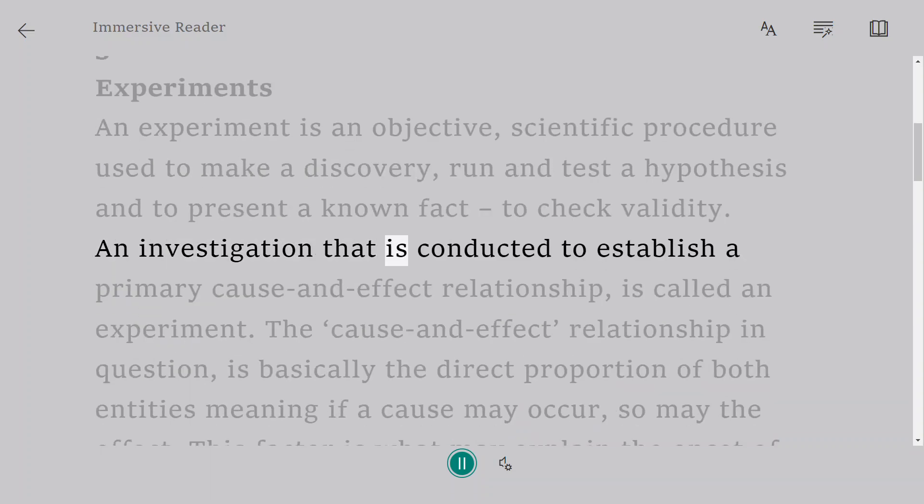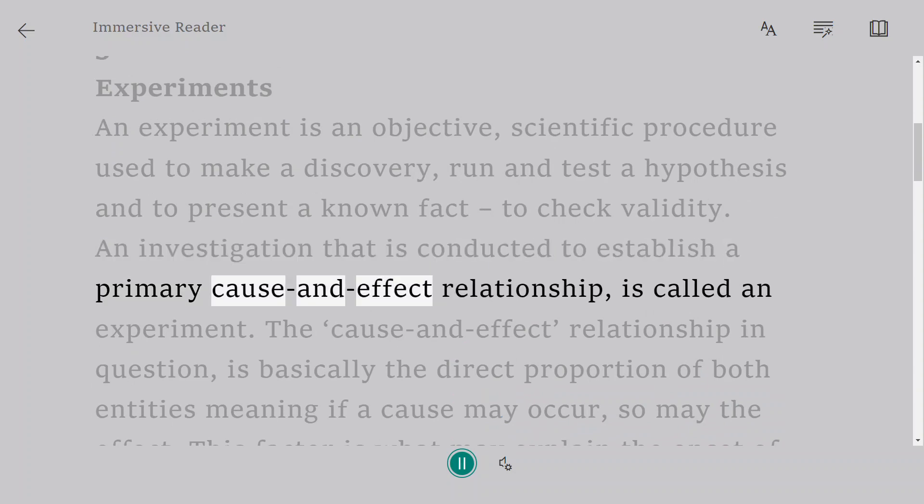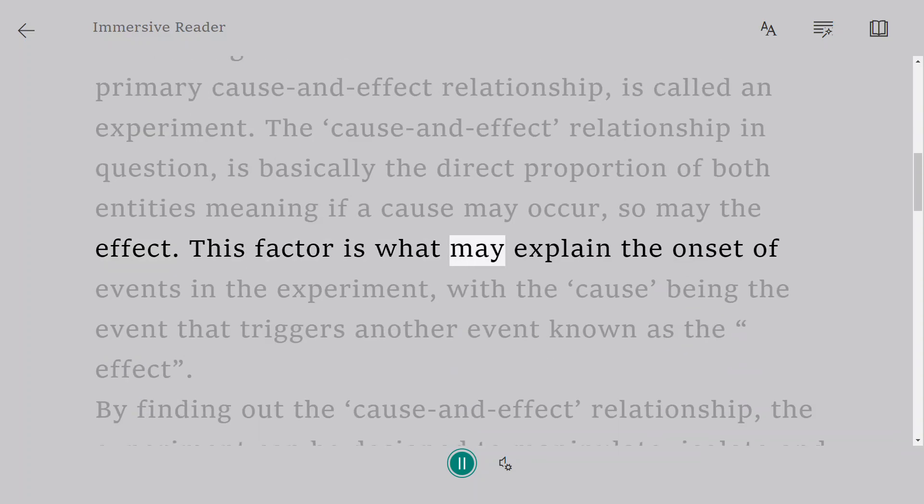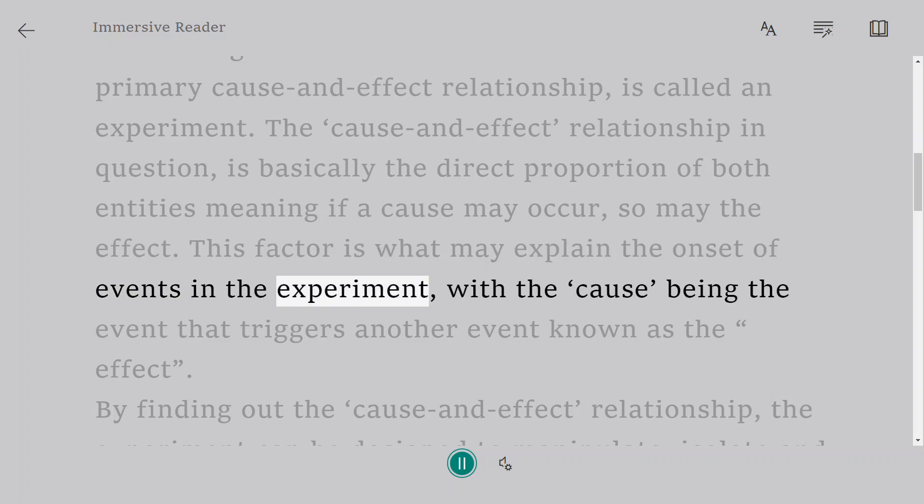An investigation that is conducted to establish a primary cause-and-effect relationship is called an experiment. The cause-and-effect relationship in question is basically the direct proportion of both entities, meaning if a cause may occur, so may the effect. This factor is what may explain the onset of events in the experiment, with the cause being the event that triggers another event known as the effect.